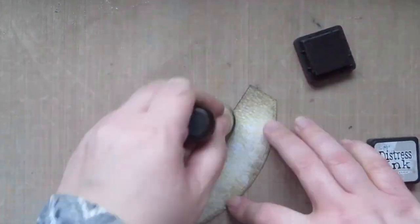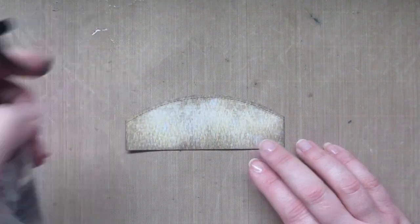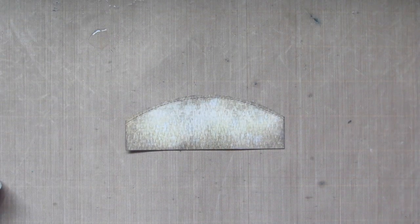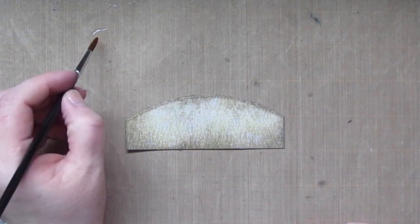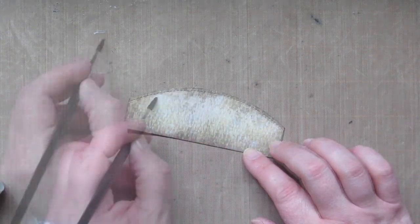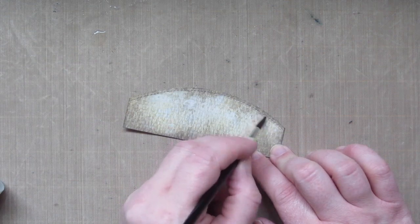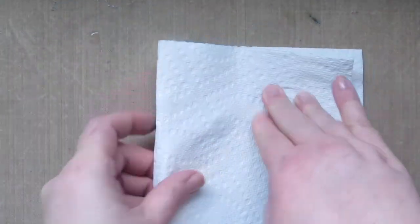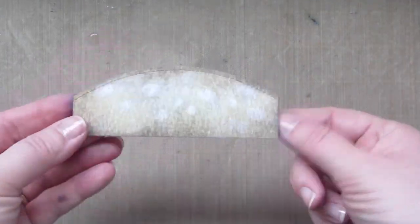And then I did add one more layer of that Pumice Stone Distress Ink, just to give it a bit more of a darker color. Since this is outer space, I wanted it to have a little more depth around the edges. Then I just sprayed some of that water straight onto my craft sheet, and then I took a paintbrush and began to paint in some larger craters, so that it would really begin to take on the surface of the moon.